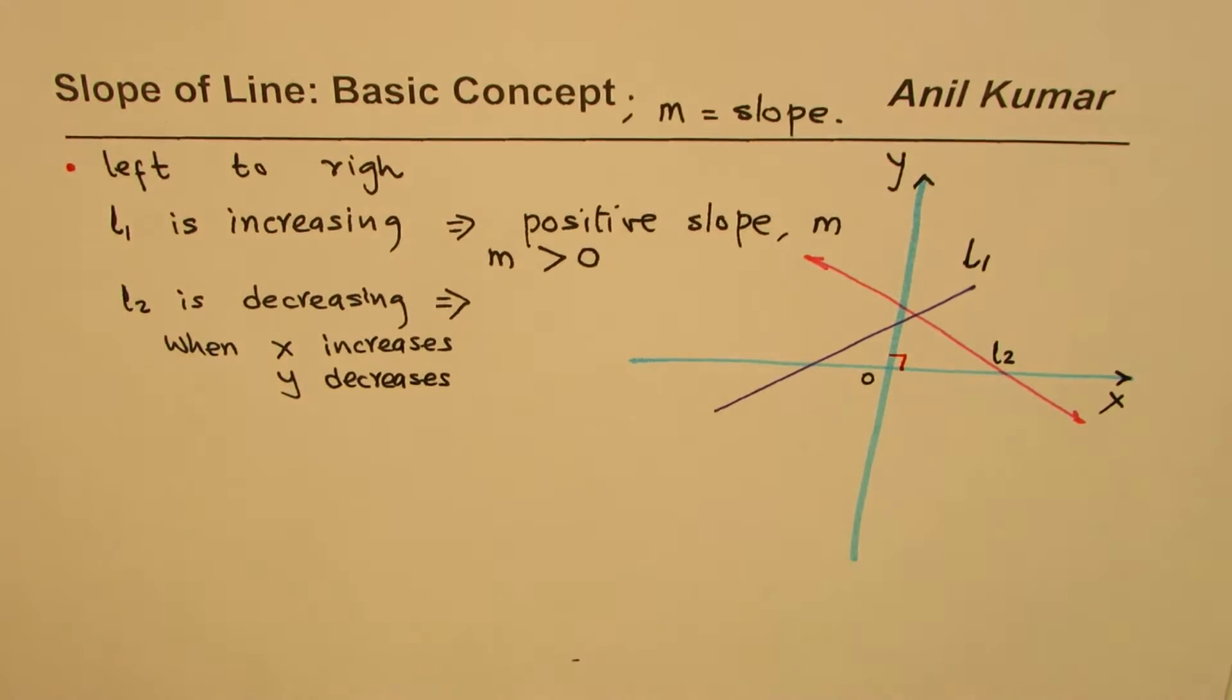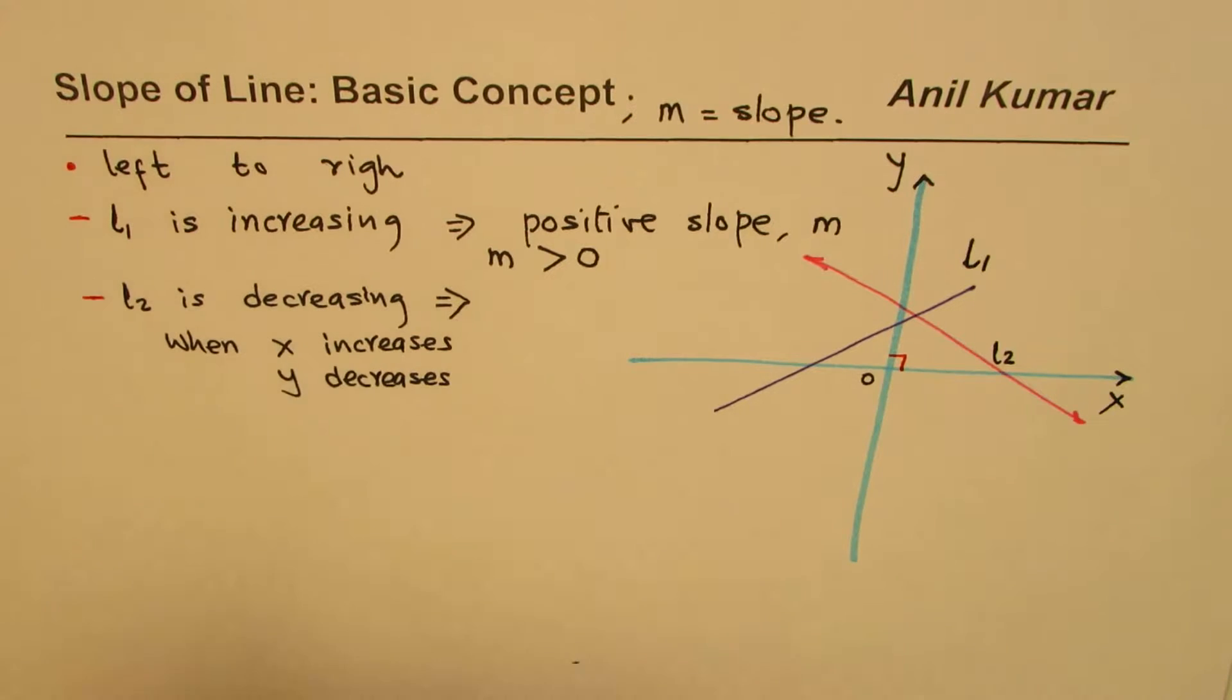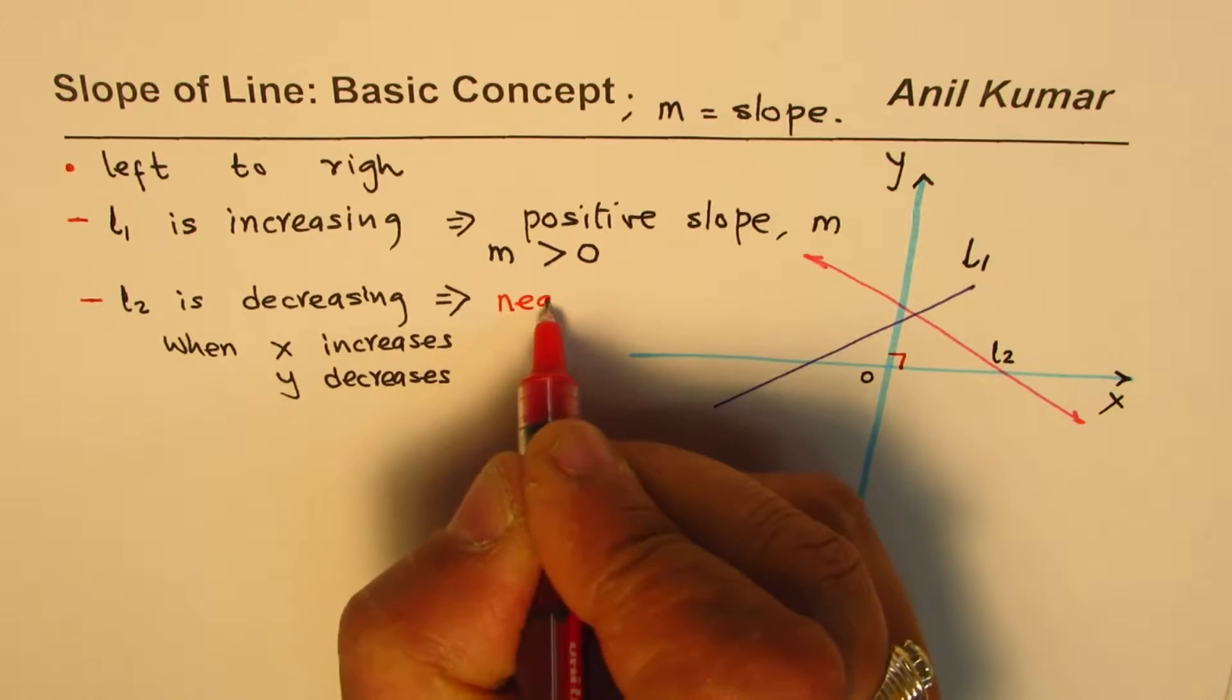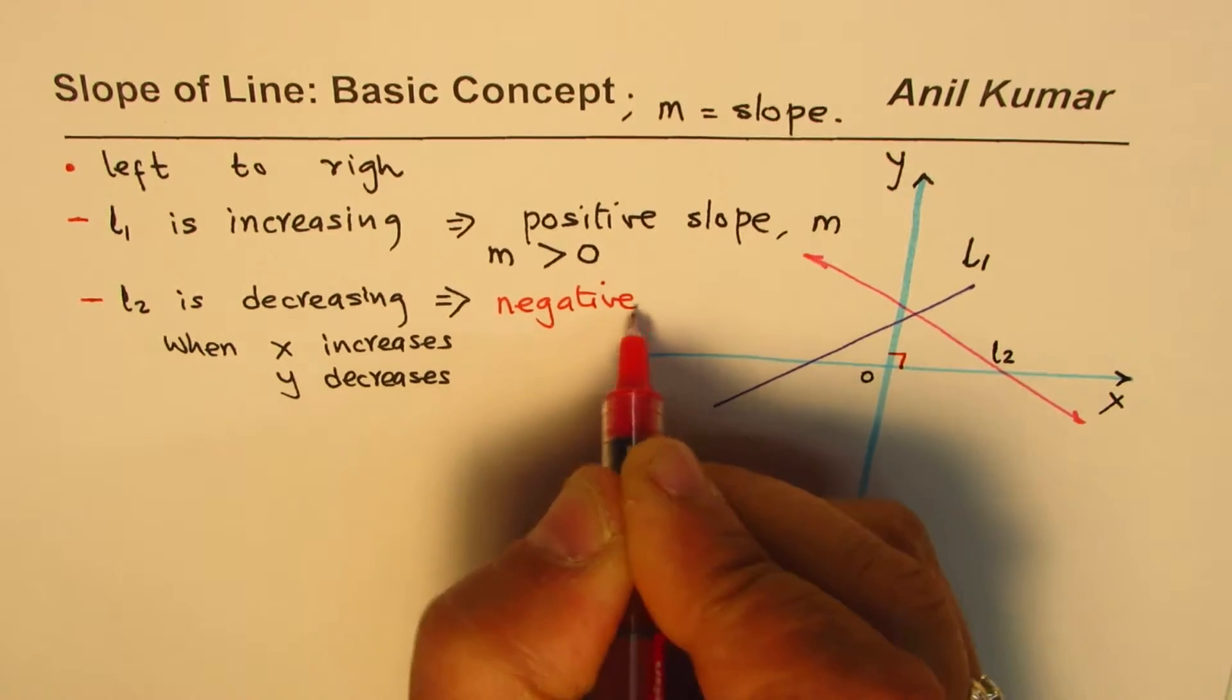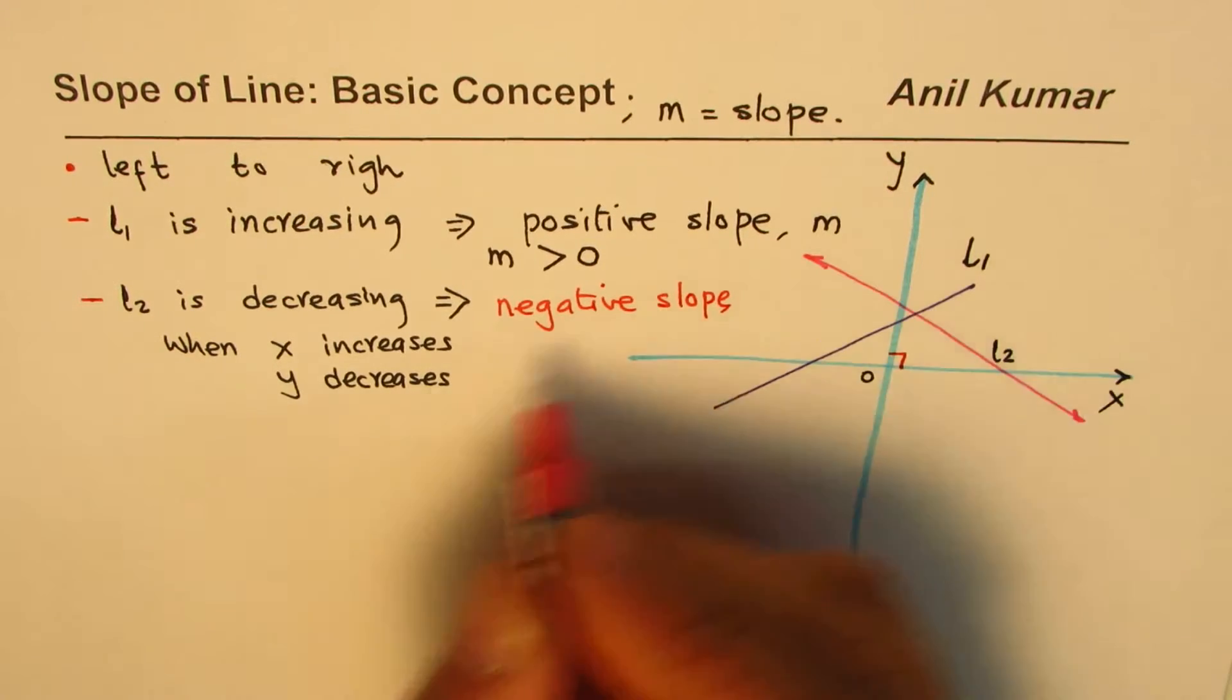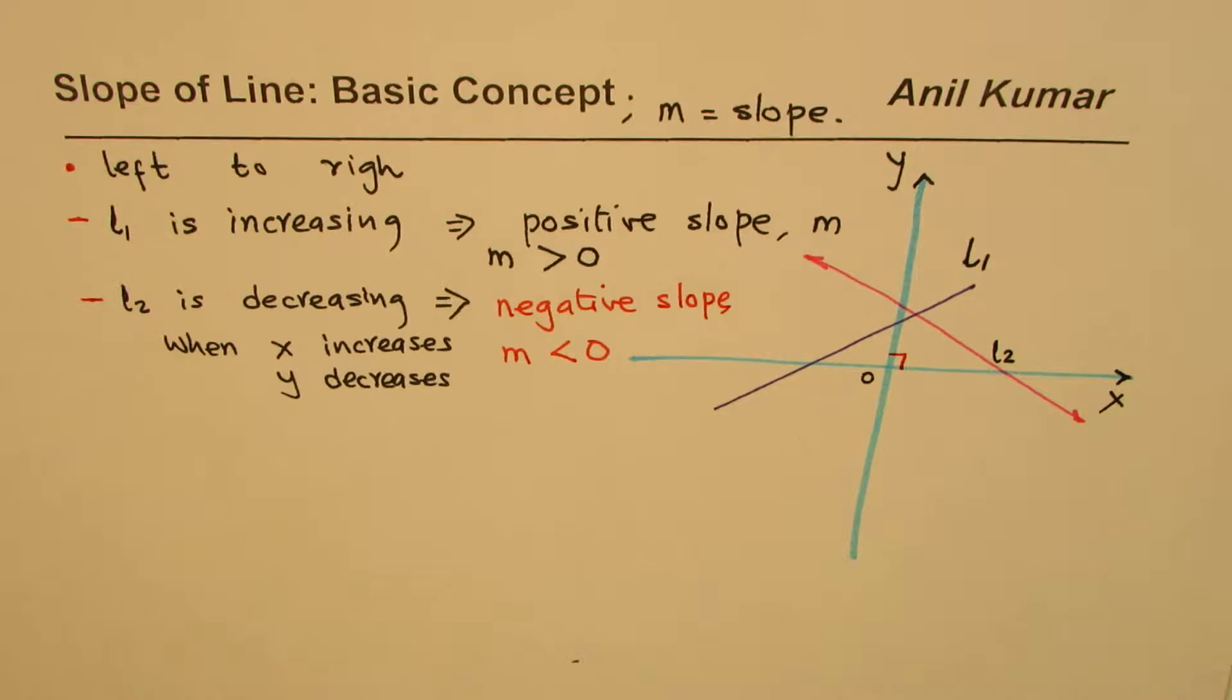That is what I mean when I am saying that line L2 is decreasing. In this particular case, we will say that the slope is negative. It is a negative slope. Or the value of M is less than 0. Lines could have negative slope, lines could have positive slope.